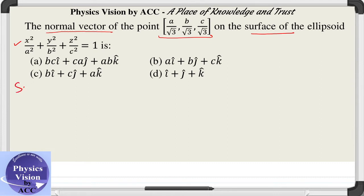You need to understand that whenever you need to calculate a vector perpendicular to some surface, you just need to take the gradient of that surface. So when we take the gradient of it, what will we get?